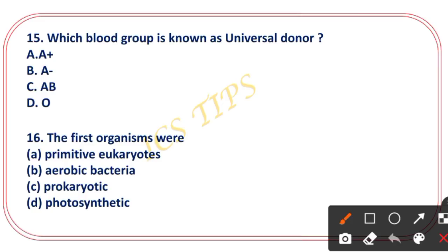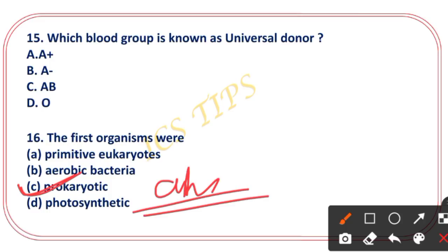The question about primitive eukaryotic aerobic bacteria: the right answer is prokaryotic — prokaryotic is the correct answer for this question.